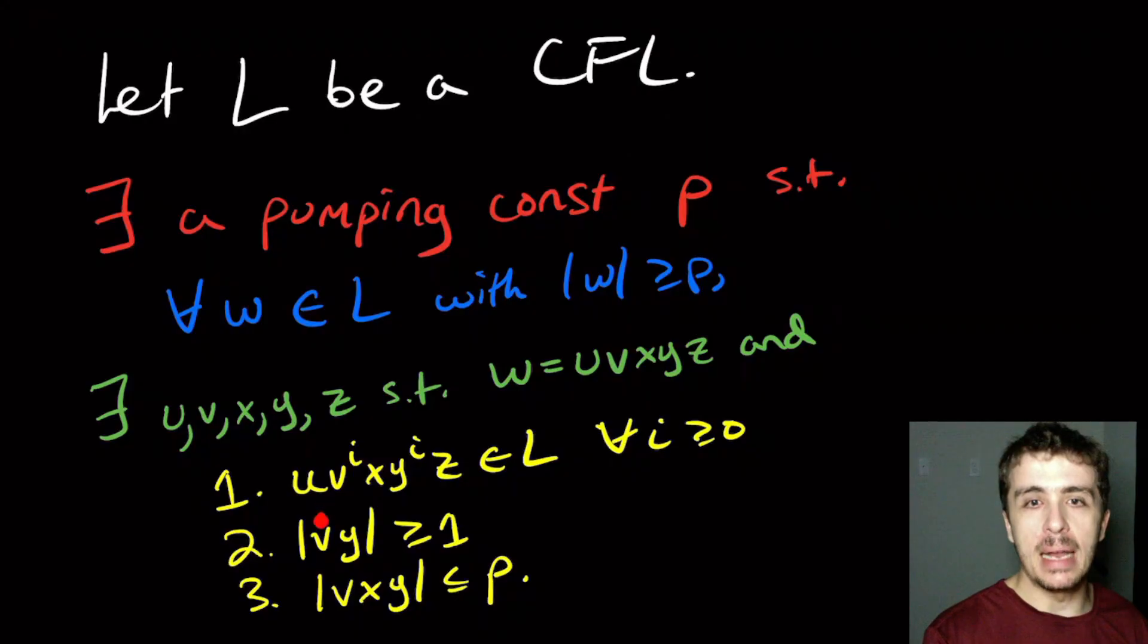We have the property that at least one of V and Y is non-empty. We don't require that both of them be non-empty necessarily, but at least one of them is. And the three middle pieces together are at most P characters, so they're bounded in size.